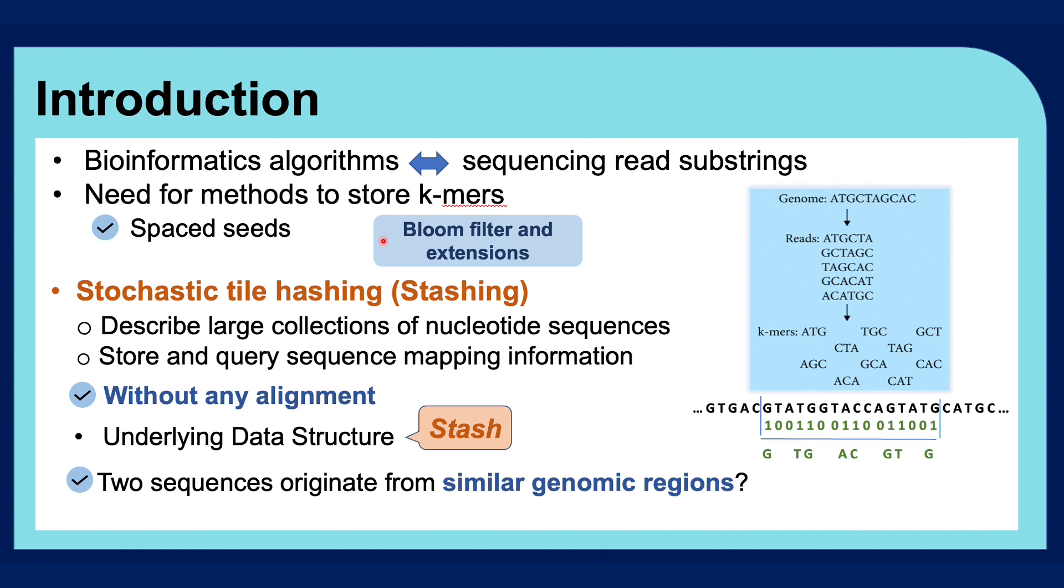Inspired by data structures such as the Bloom filter or its extensions, we introduced stochastic tile hashing, or stashing, in order to describe large collections of nucleotide sequences and store and query sequence mapping information without any alignment. The proposed underlying data structure is called STASH that can answer the question of whether two sequences originate from similar genomic regions.